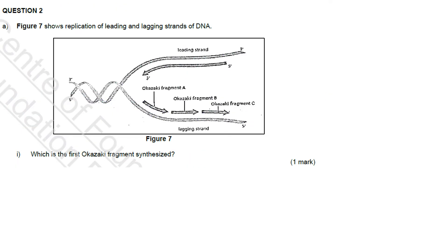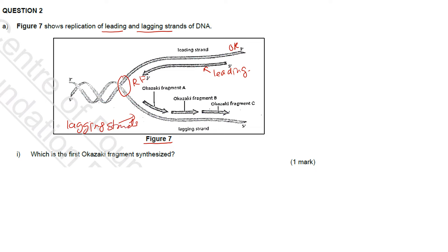Question 2A: Figure 7 shows replication of leading and lagging strands of DNA. The leading strand is synthesized from the origin of replication towards the replication fork. The lagging strand is synthesized as Okazaki fragments.